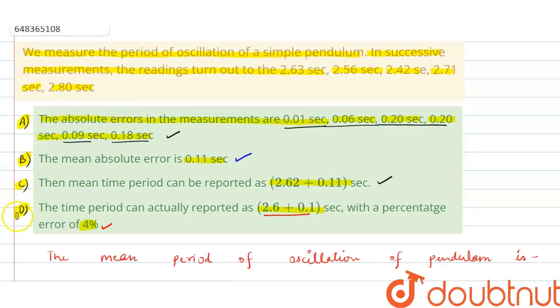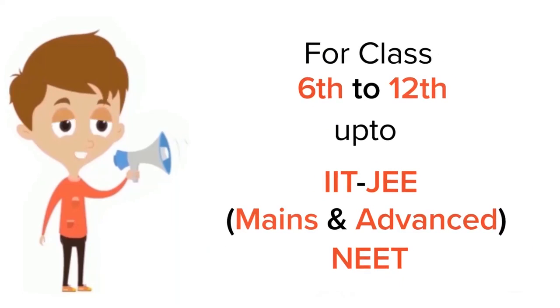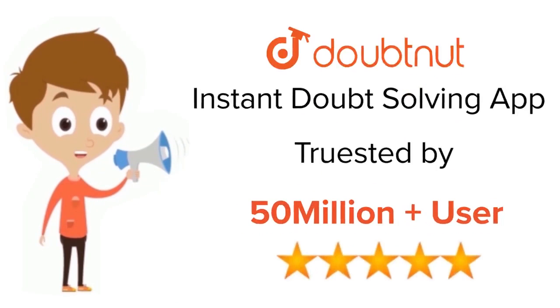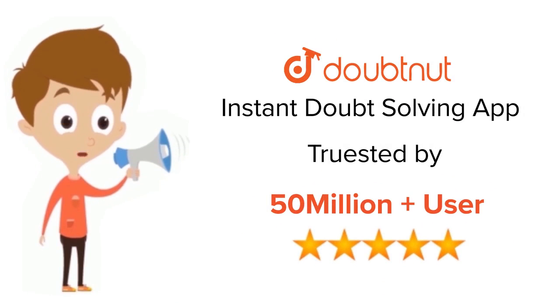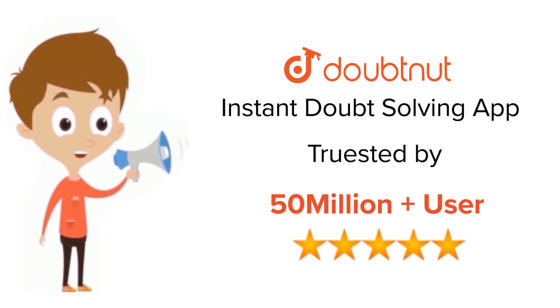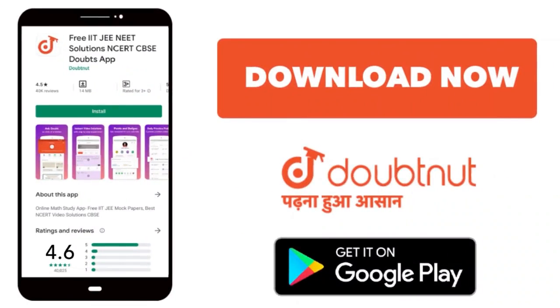So all four options are correct: option A, option B, option C, and option D. I hope you understood this question and it is clear to you. Thank you. For class 6–12, IIT JEE and NEET level, trusted by more than 5 crore students — download the Doubtnut app today.